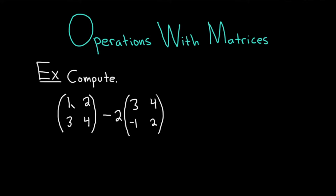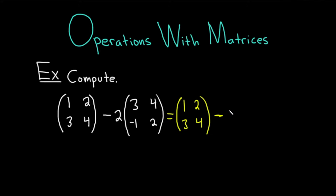The first one is a 2 by 2 matrix because it has two rows and two columns. Let's just work it out right away. Let's keep the first matrix the same, so it's 1, 2, 3, 4. And then you can distribute the negative 2. I'm just going to distribute the 2 and leave the minus sign here. So 2 times 3 is 6, 2 times 4 is 8 — you just multiply by each entry — 2 times negative 1 is negative 2, and 2 times 2 is 4. Whenever you have a number like this outside a matrix, you basically just multiply it by each of the entries in the matrix.